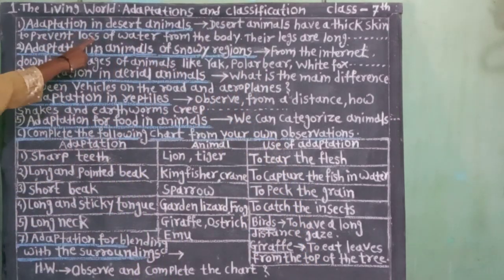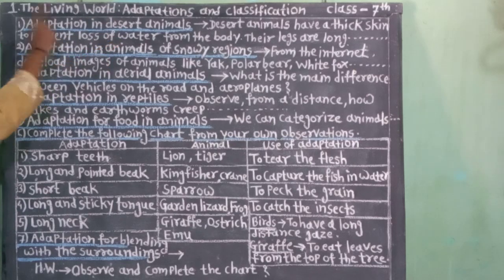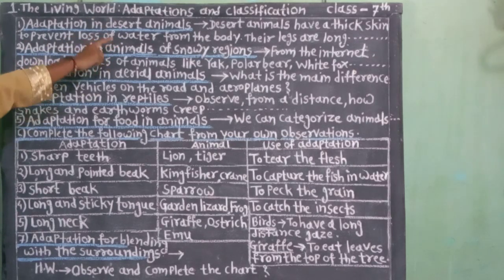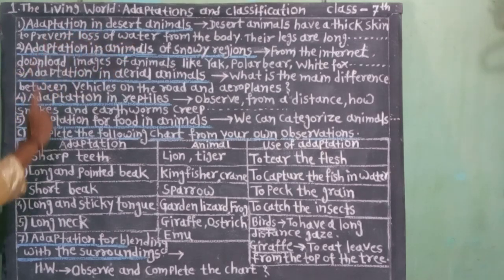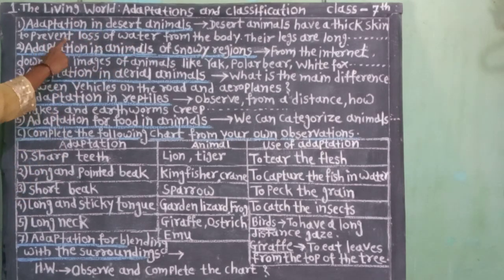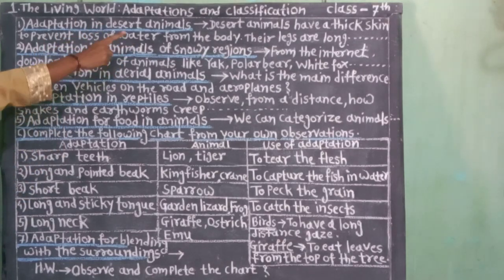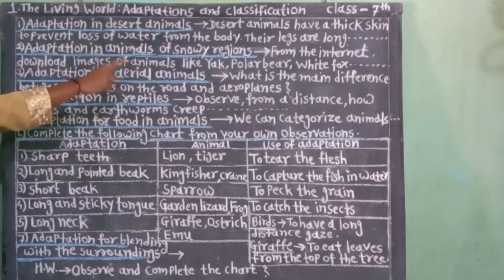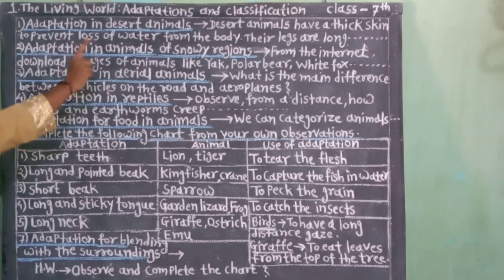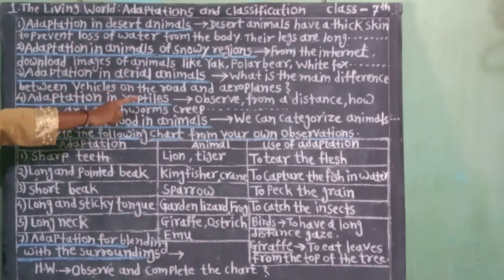Adaptation in Desert Animals. Desert animals have a thick skin to prevent loss of water from the body. Their legs are long. The nostrils are protected by folds of skin.